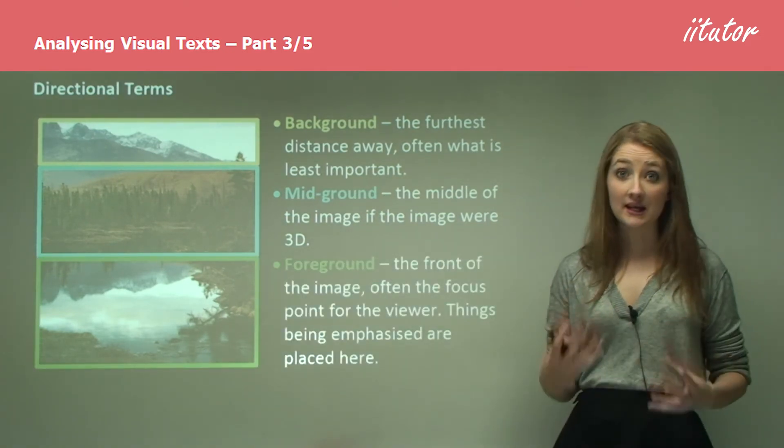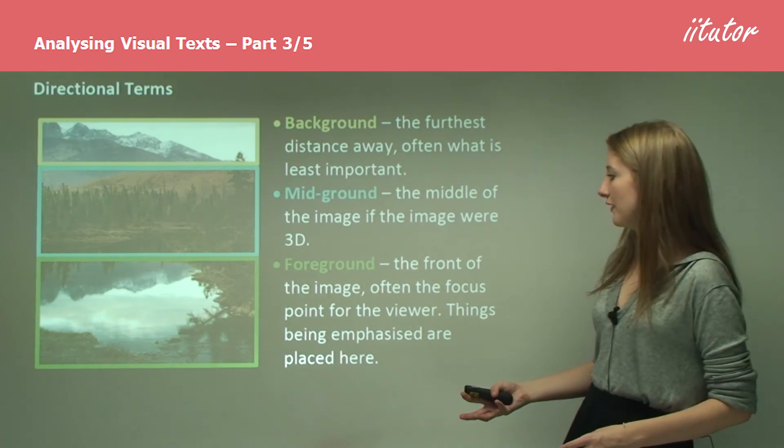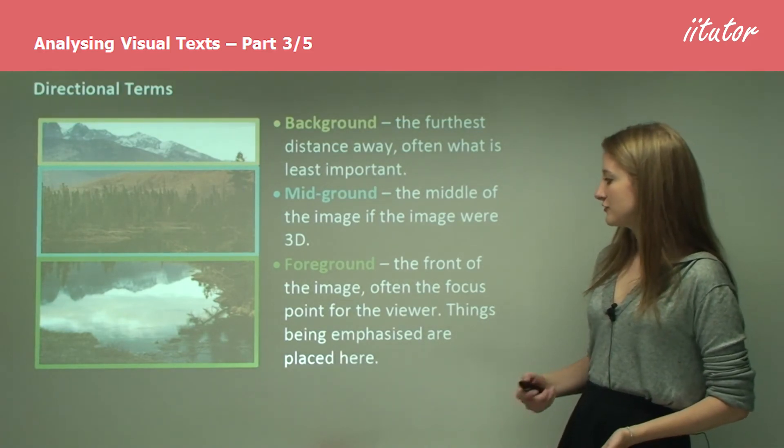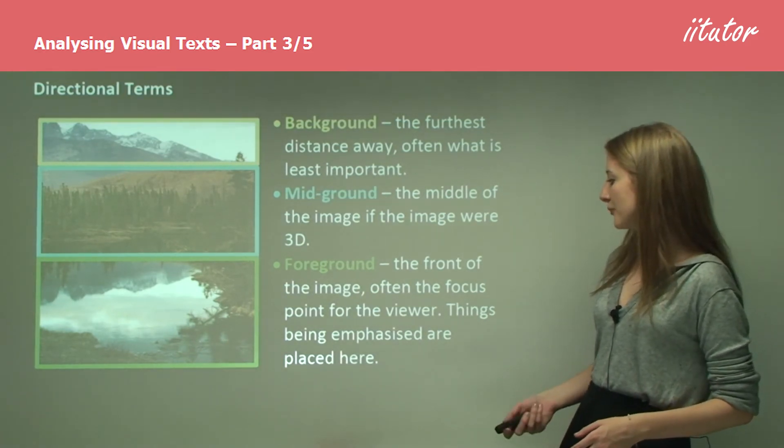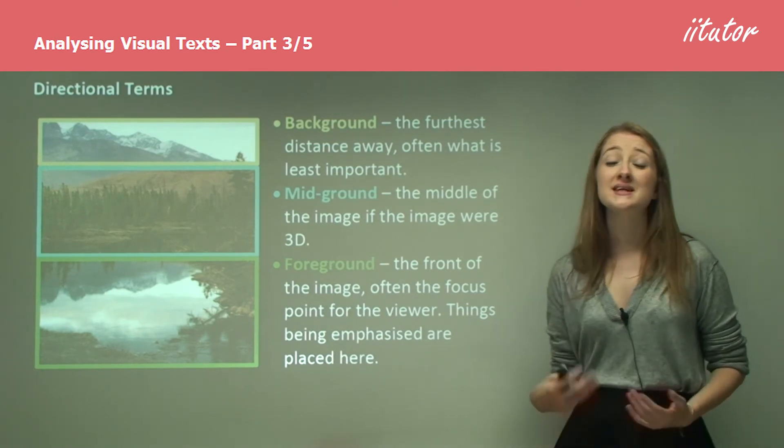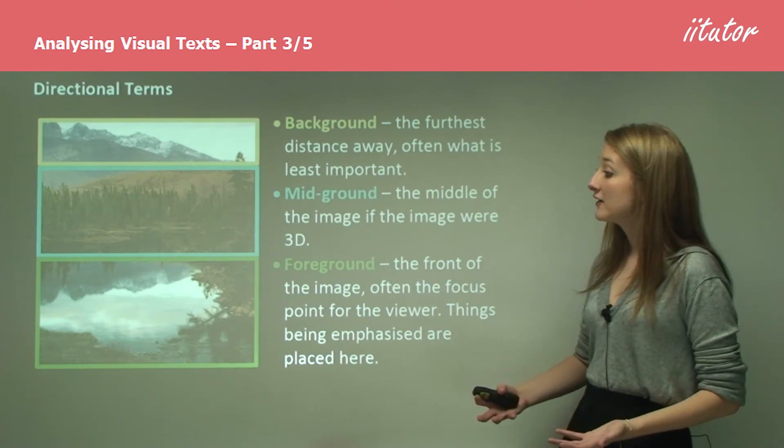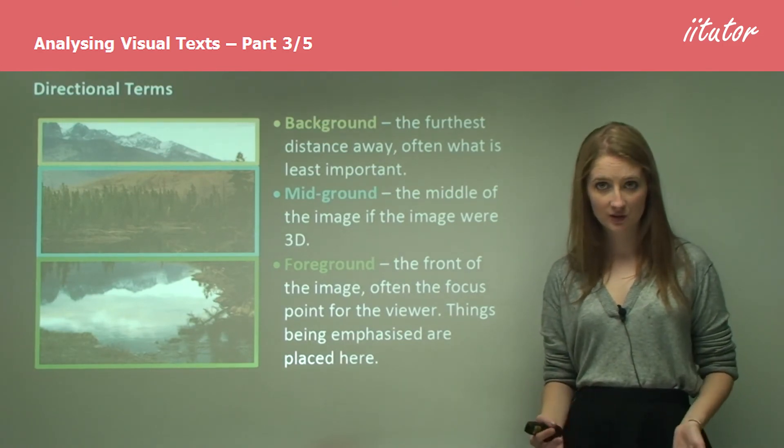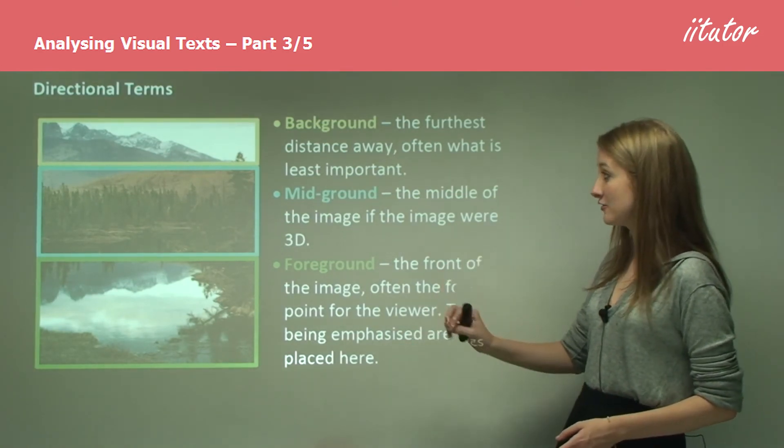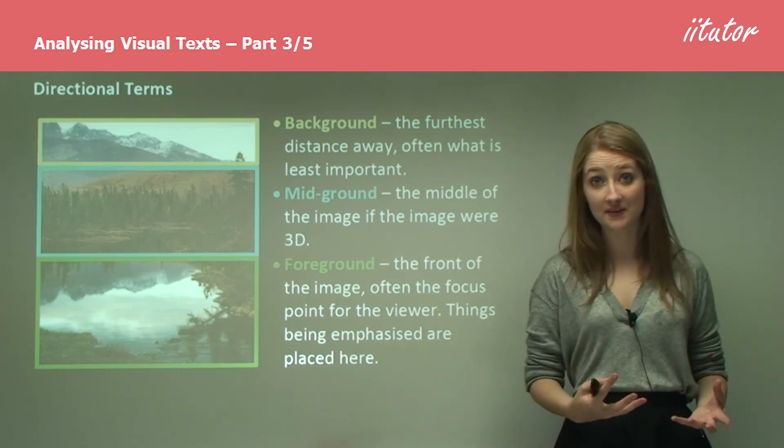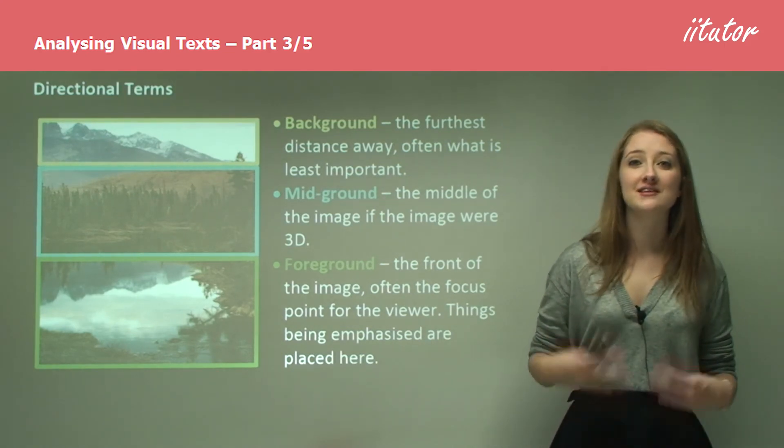That thing that is closest to you is called the foreground. The foreground is the front of the image and is often the focus point for the viewer, so things being emphasized are placed here. Often as well, this is where the characters are going to be placed in an image. The humans are going to be in the foreground where they're involved in the action and they can use things like dialogue.